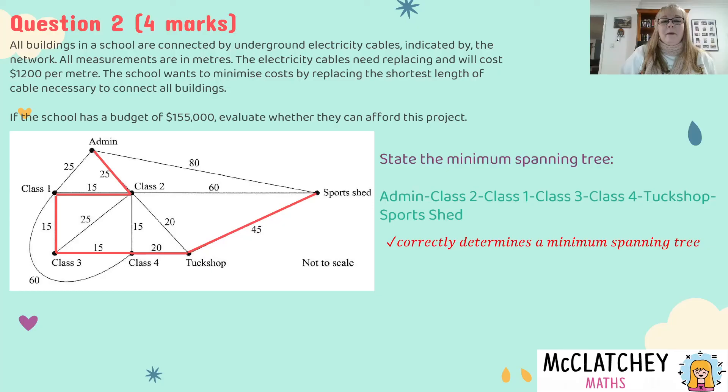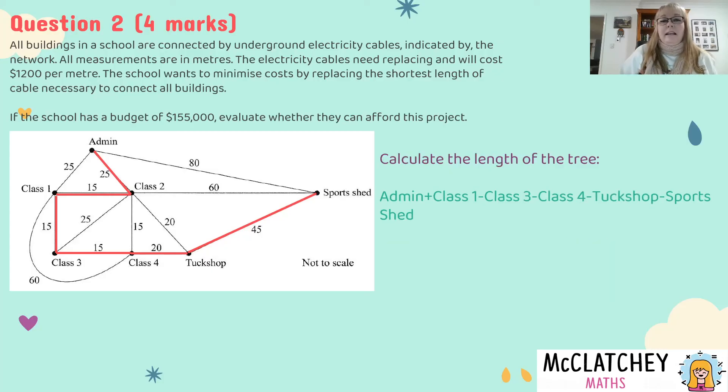Okay on to the second mark because the question didn't just ask me to create a minimum spanning tree I have to evaluate if they can afford the project. So now that I've got all the cables in place and decided where they're going I need to work out how long that network is in meters. So I'm going to calculate the length of the tree. So from admin to class 1 remember it was 25 and I'm going to add to that 15 for class 2 and then class 1 and then another 15, another 15, onto the tuck shop is a 20 and then onto the sports shed is 45. Add those together you get 135 meters that was my second mark and that's for determining the total length of the network.